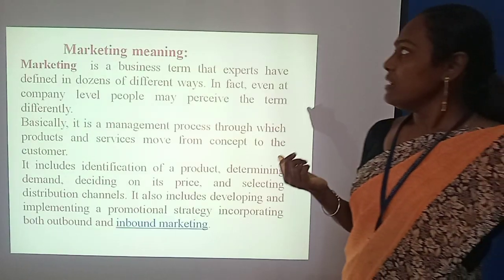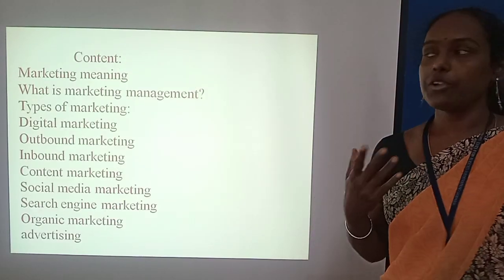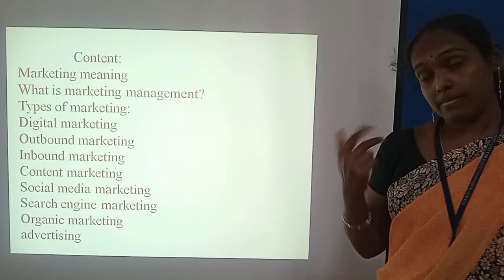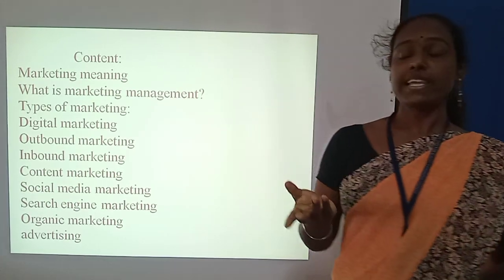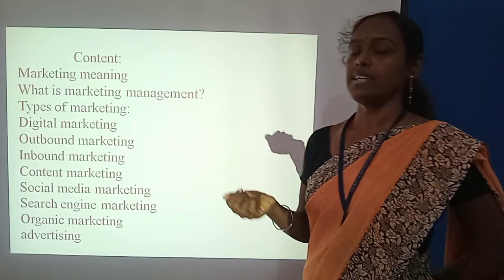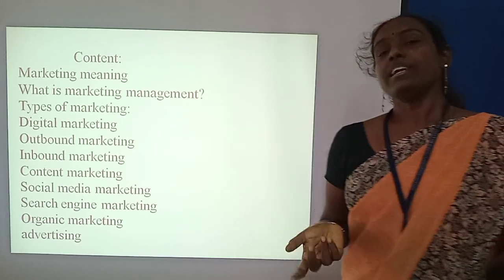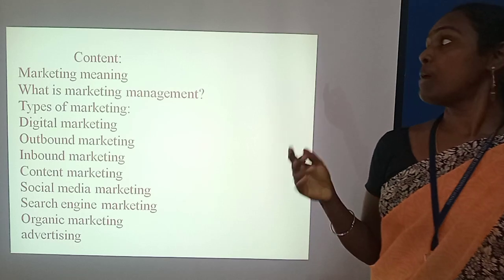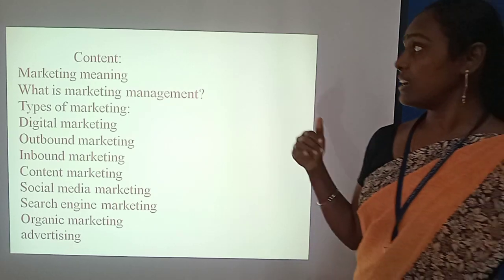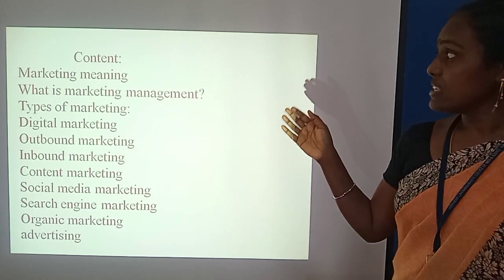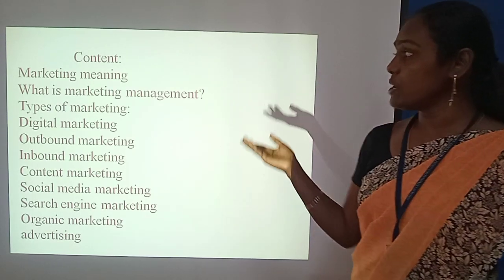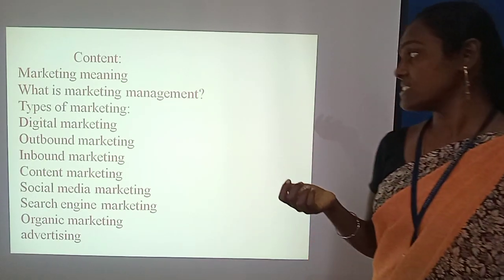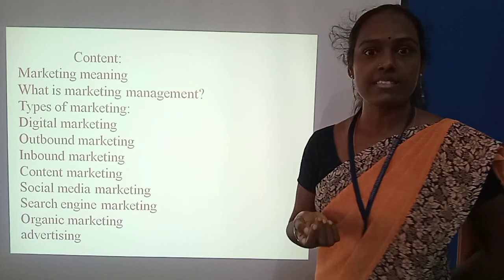So, I am going to talk about marketing and market. Market means buyer and seller meet — that function is called a market. Marketing means exchange of the product and service. The types of marketing include: digital marketing, outbound marketing, inbound marketing, content marketing, social media marketing, search engine marketing, organic marketing, and advertising.